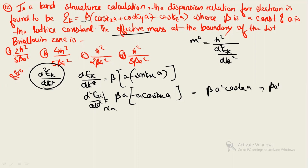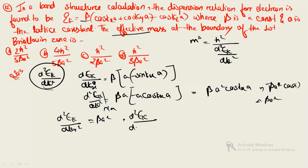Similarly, d²ε_k / dky² equals beta·a², and d²ε_k / dkz² also equals beta·a². The sum of all three second derivatives is 3·beta·a². Therefore, the effective mass m* equals ℏ² divided by 3·beta·a². This is the final answer for the effective mass at the first Brillouin zone boundary.